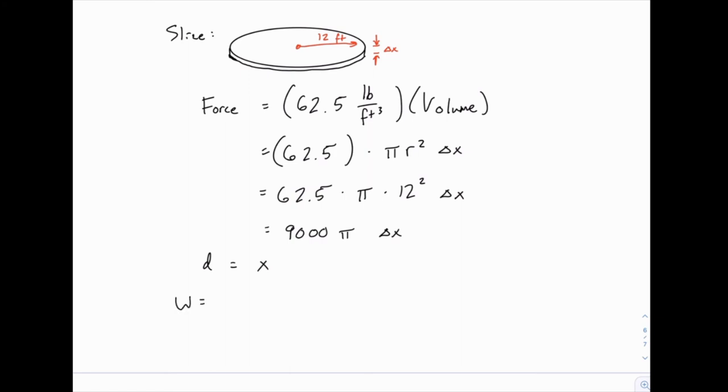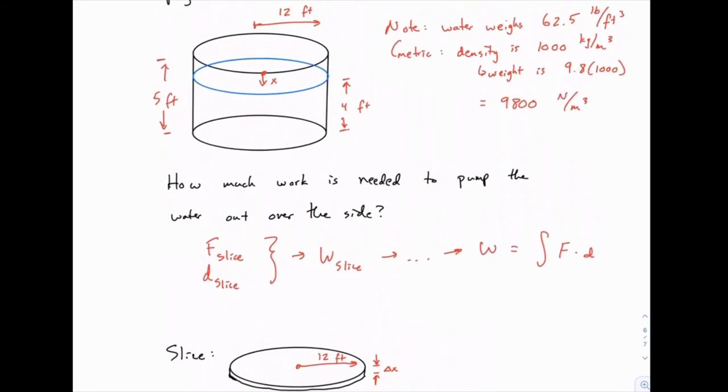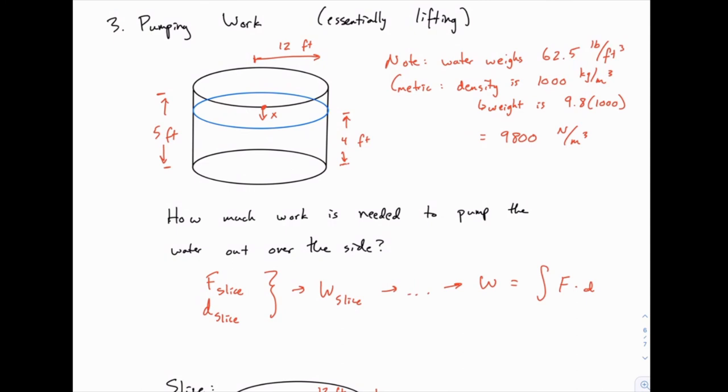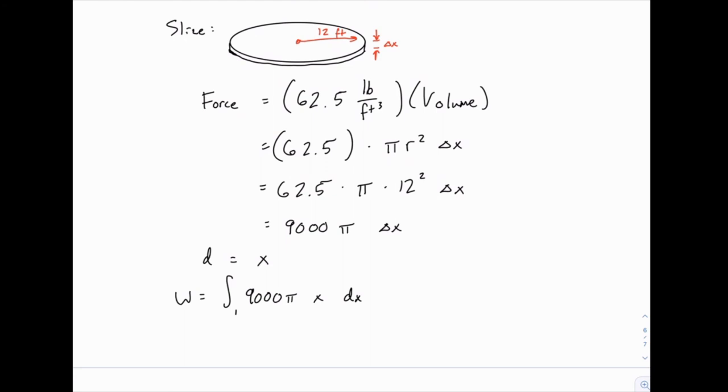So then the work will be force times distance, 9,000 pi times x. And instead of delta x, we put this in an integral with dx. All we need to finish our integral is limits of integration. So again, we come back to the problem and think about what values of x are related to the beginning and the end of the problem. In other words, where are we starting and stopping this process of pumping water? The water starts when x equals 1, and the water stops when x equals 5. So those are our limits of integration. So all you have to think about is what are the values of x at the top and bottom of the water? And then the first number is the lower limit, the second number is the upper limit. Of course, those are always in order in these applications.